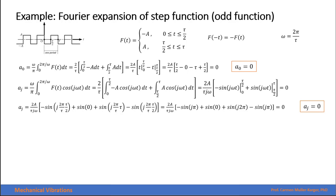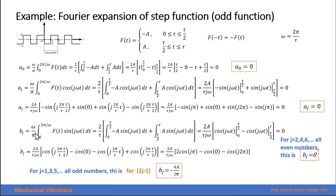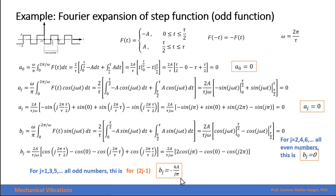Now let's calculate the bⱼ coefficients. The bⱼ expression requires multiplying the piecewise function by sine and integrating. After integrating and evaluating, we find that for all even values of j, the coefficient is zero. For odd values of j, we get a nonzero value. Because certain terms evaluate to negative one, the numerator gives negative four, and substituting ω = 2π/τ causes τ to cancel, yielding the expression bⱼ = 4A/(jπ) for odd j.